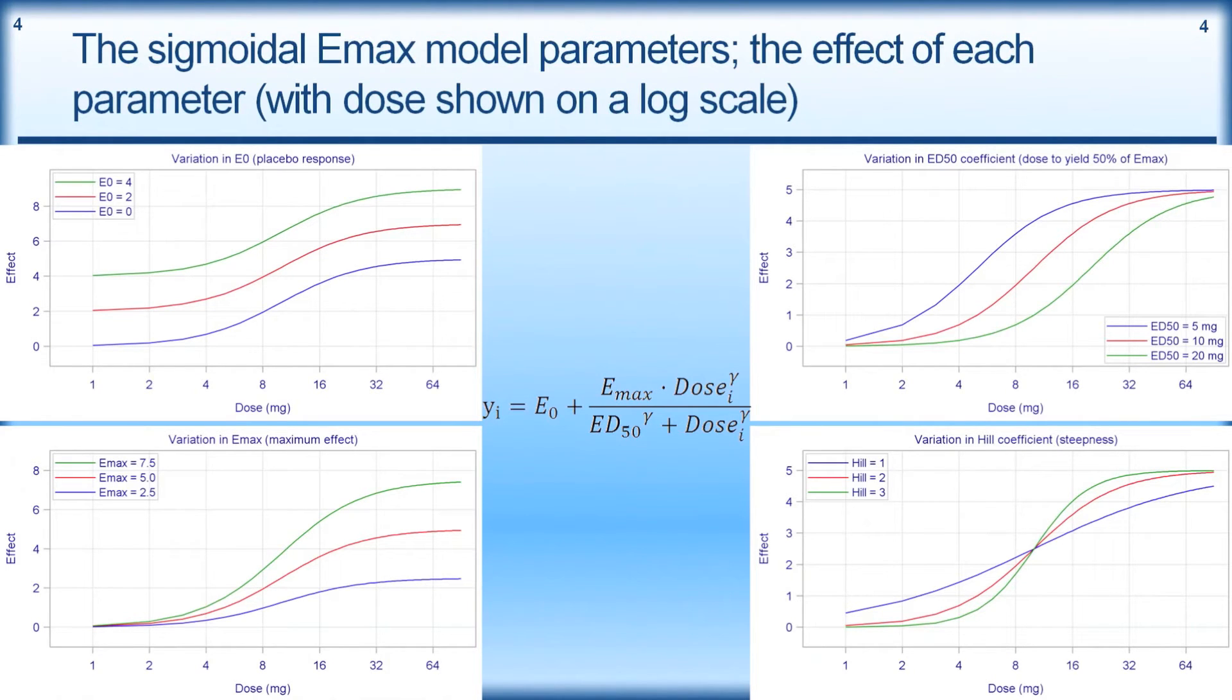To give an overview of the different parameters and their effect on the shape of the dose-response. In the top left panel here, we have the variation in the E0. And E0 is simply shifting this curve up or down. So here with an E0 of 0 or 2 or 4, the whole curve just gets shifted up or down. When we talk about variation in the Emax, here we have an Emax of 2.5, a 5 and a 7.5.